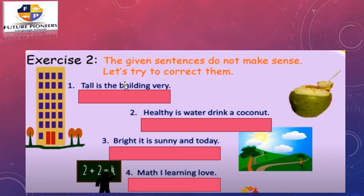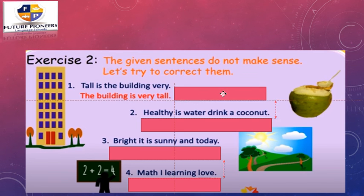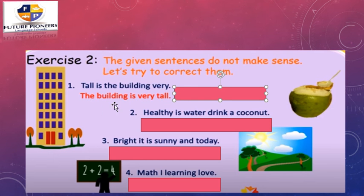The given sentences do not make sense — let's try to correct them. We have some sentences that are missing something, so let's rearrange them. First: 'tall is the building very' — this doesn't give us a complete thought, so we rearrange it to: The building is very tall. Now it gives us a complete thought and makes sense. The subject is 'the building' and the verb is 'is.' The T in 'The' is capital and it ends with a period — this is a sentence.